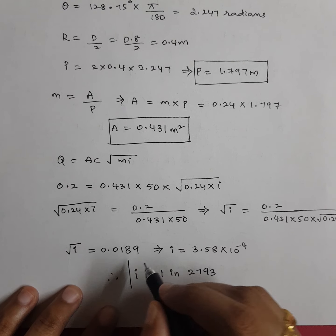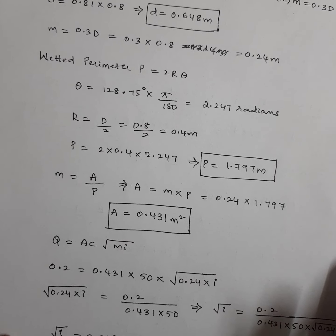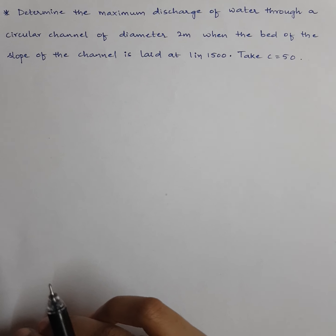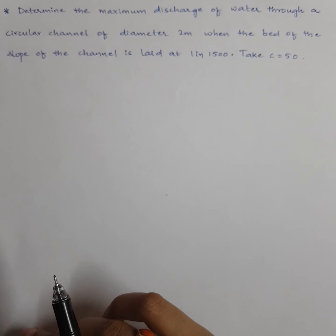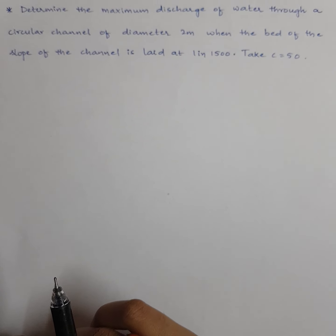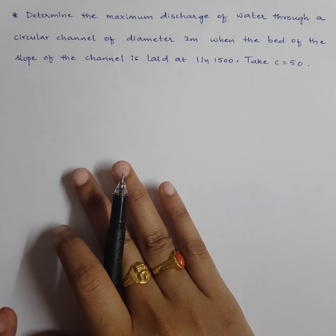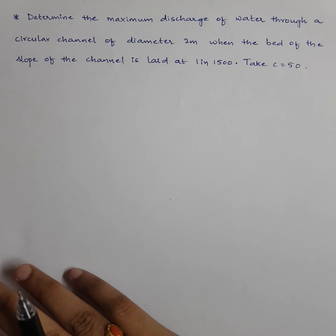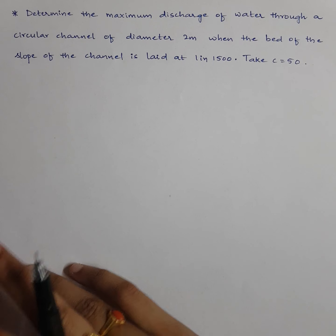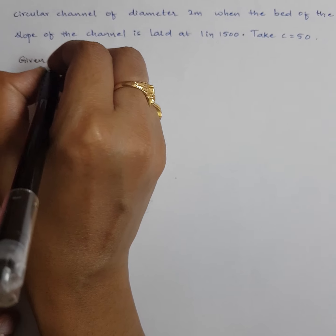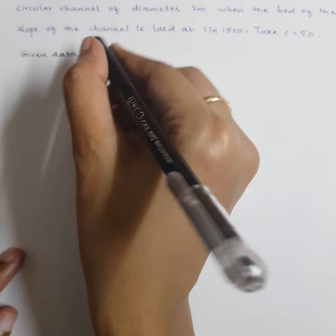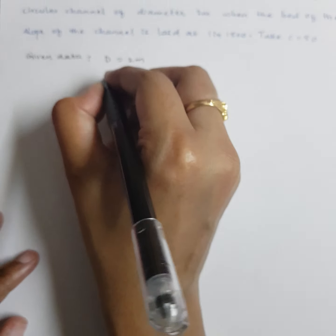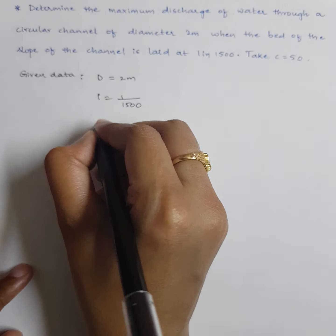This concludes the maximum velocity condition problem. Now let's see the last problem: find the maximum discharge through a circular channel of diameter 2 meters when bed slope is 1 in 1500, with C equals 50. This is the maximum discharge condition. Given: D equals 2 m, I equals 1/1500, C equals 50. Find Q.